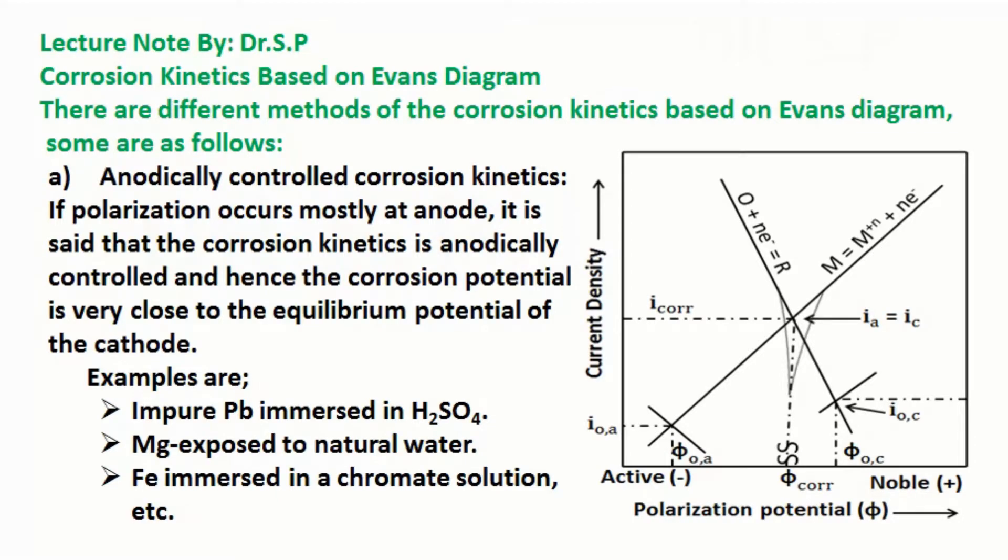Here, the intersecting point of the anodic and cathodic reactions corresponds to the corrosion current density as well as the corrosion potential. By estimating the corrosion current density, the corrosion rate can be calculated in desired units by using Faraday's law.